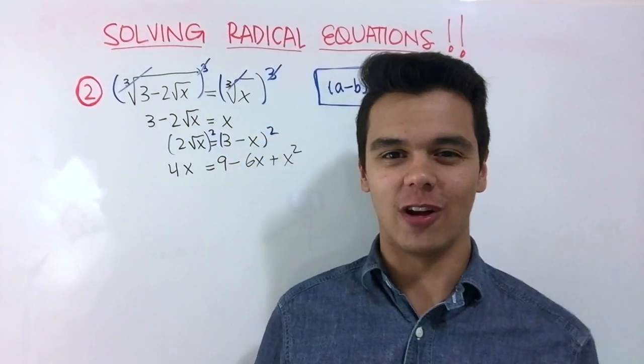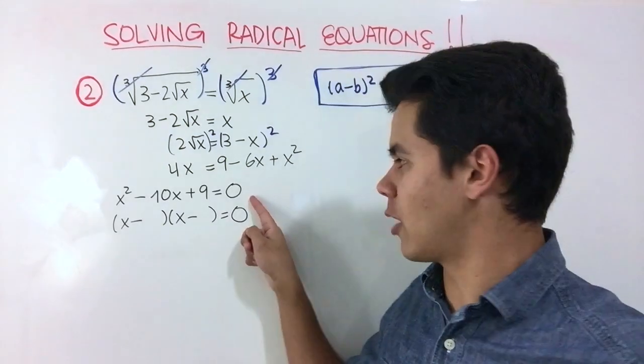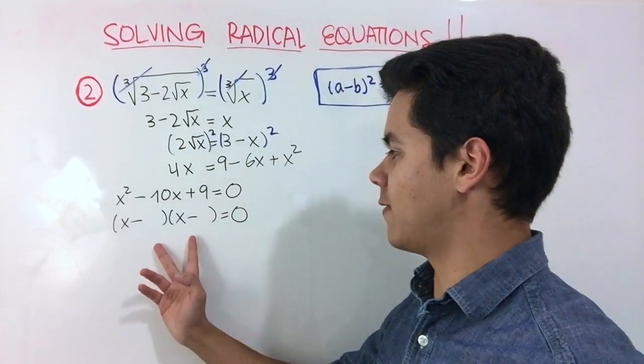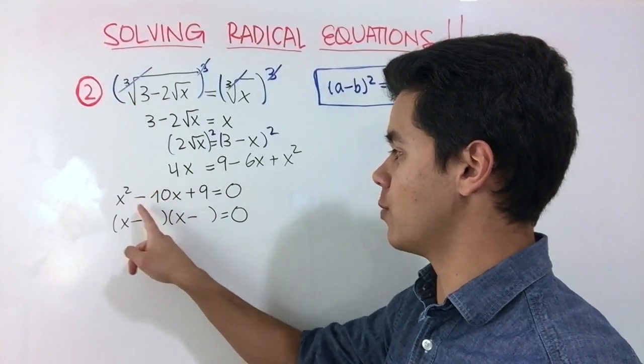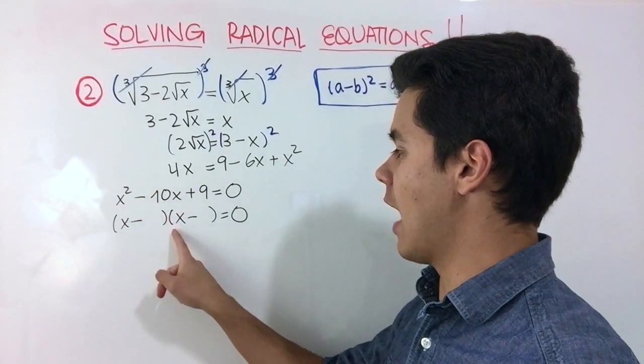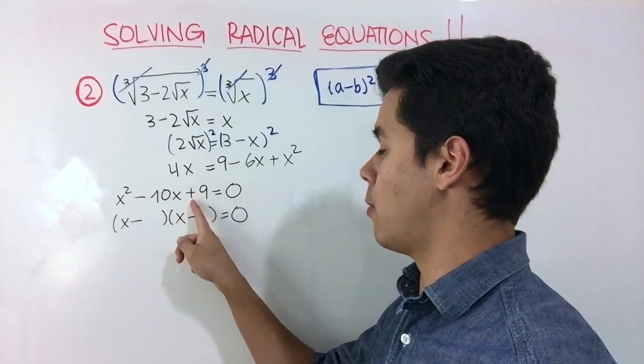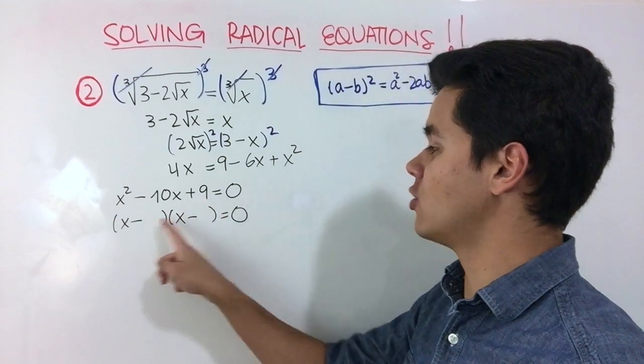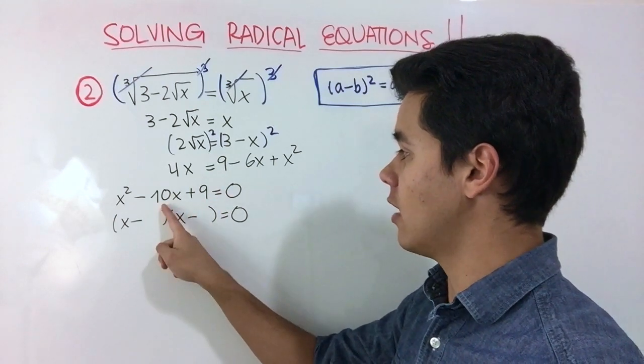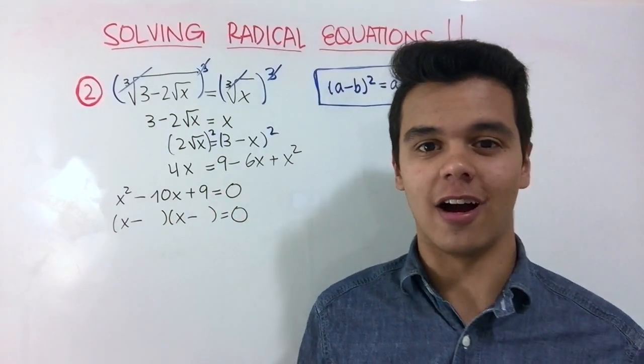Finally, we solve for x in this quadratic expression. We rearrange the expression and then factor it. We need two numbers that add to give us 10 and multiply to give us 9. Those numbers are 9 and 1.